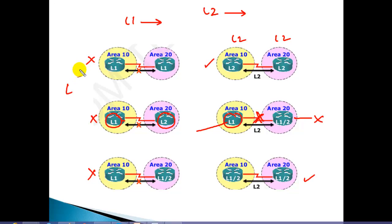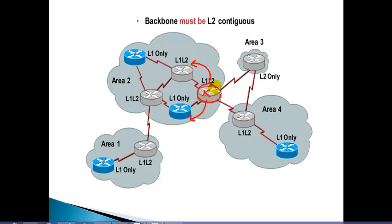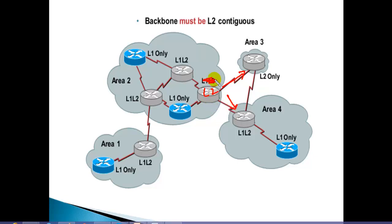Now let us look at a sample diagram to get a clearer idea of what levels should be present. Here, we have a border router that is communicating with internal routers as well as external routers. This router must be configured as Level 1/Level 2. If you change it to just Level 2, it will be able to exchange routes with the other area routers but it will affect the exchange of routes with internal routers.